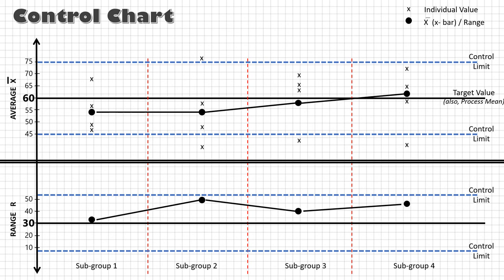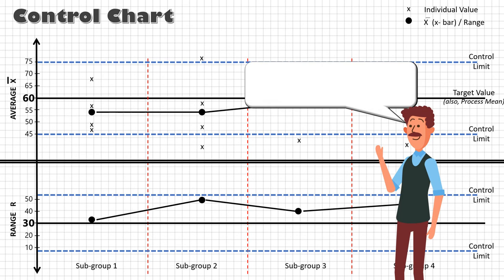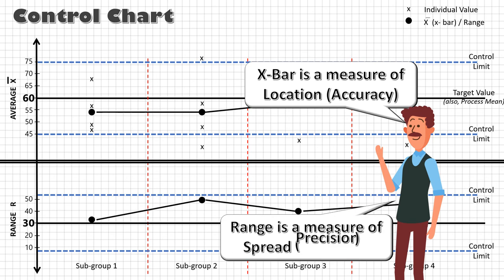Together, these two run charts are known as control charts, where X-bar is a measure of central tendency—that is location or accuracy—and range becomes a measure of variation—that is spread or precision.